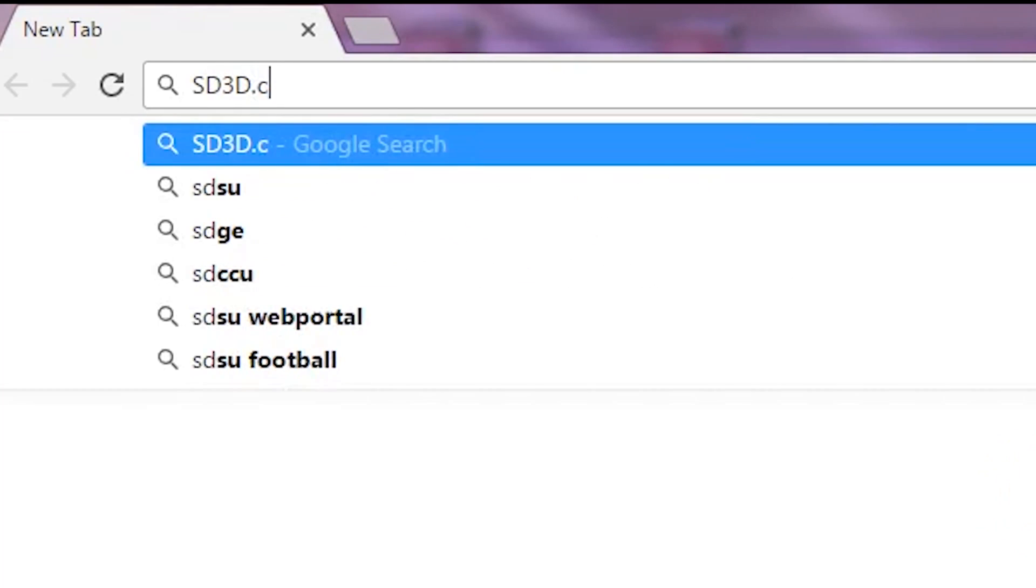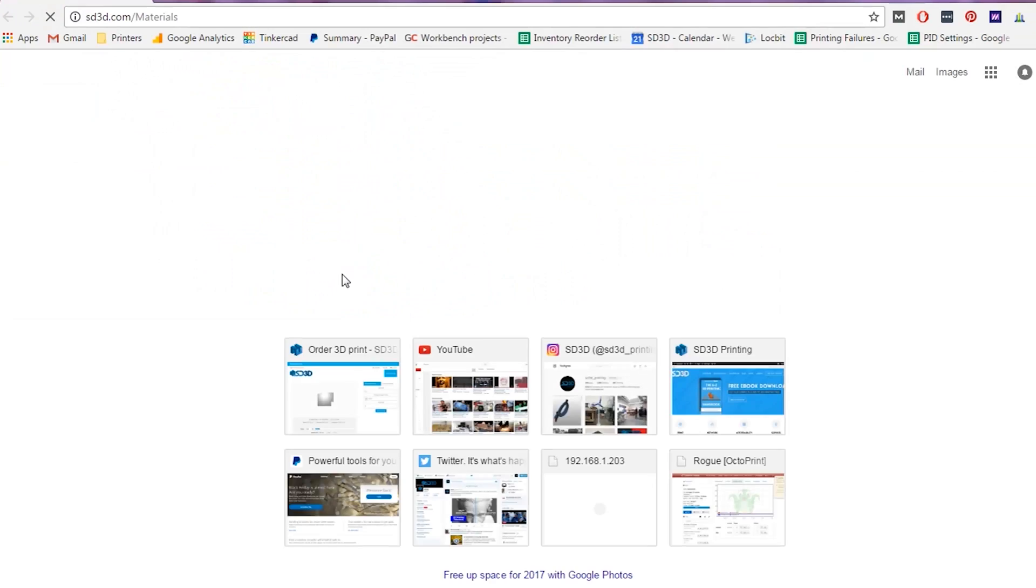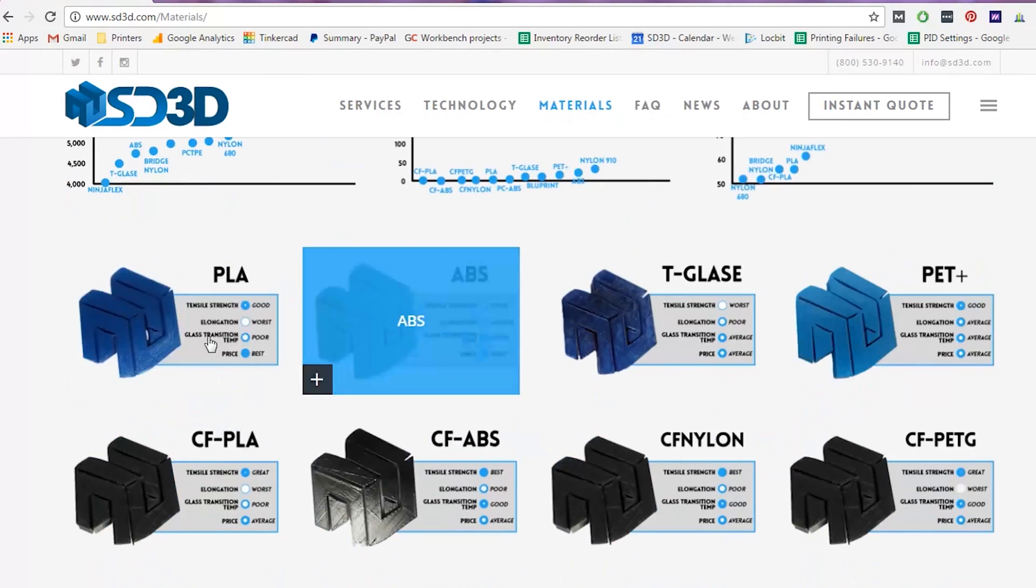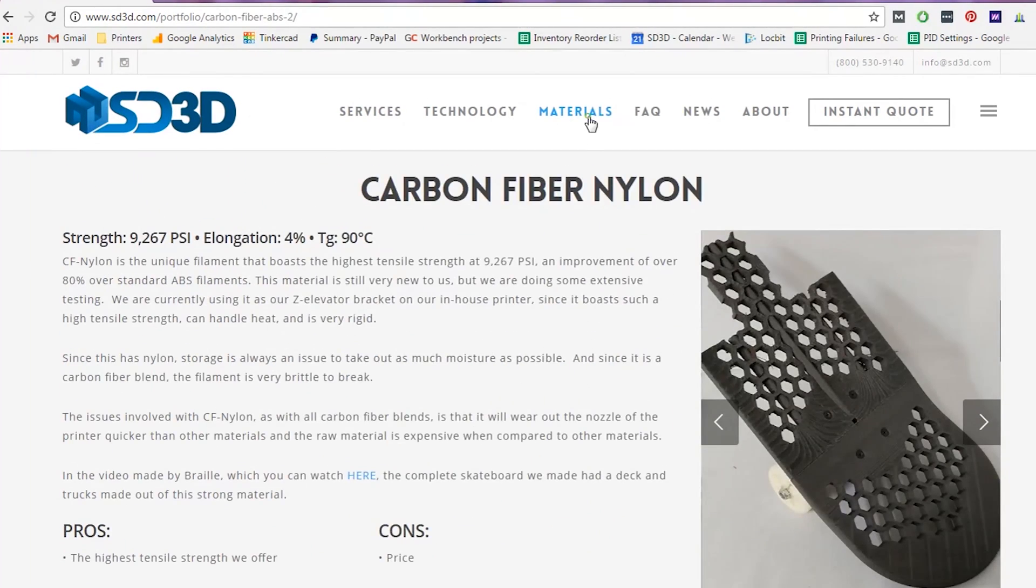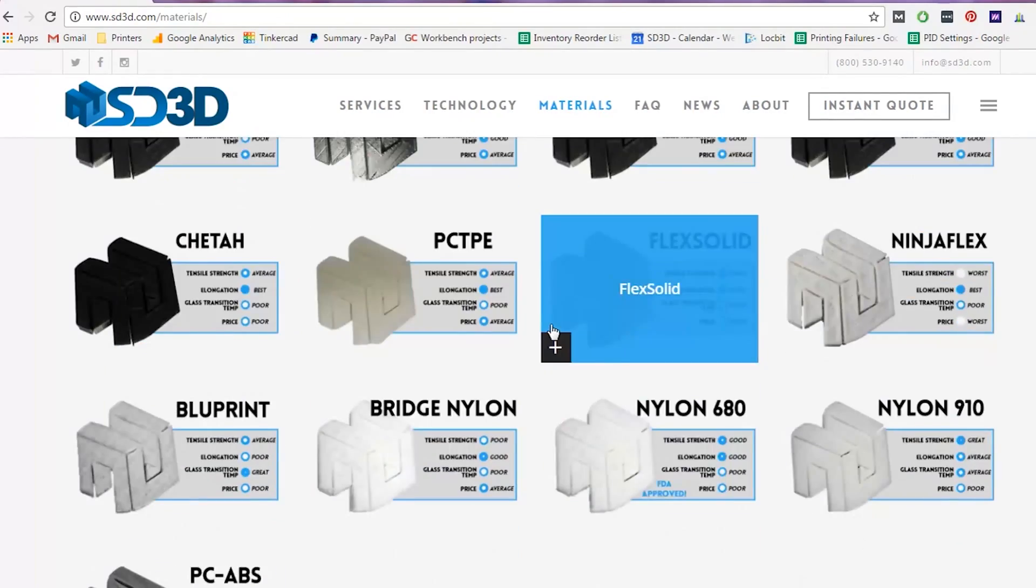If you have further questions, be sure to visit sd3d.com/materials. Here, we go over each material option along with their tensile strength, elongation, and glass transition temperatures. We then compare each of these options via graphs and charts.